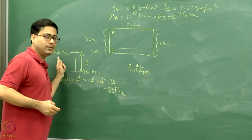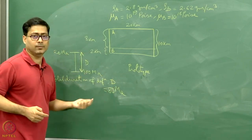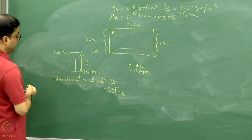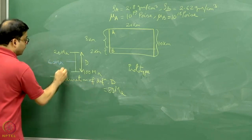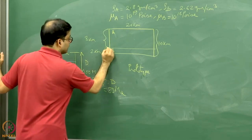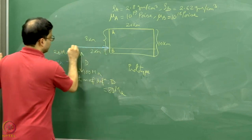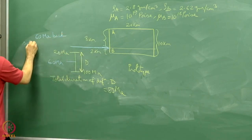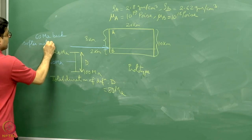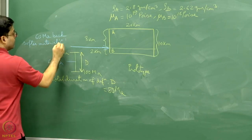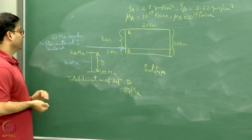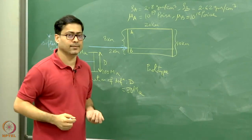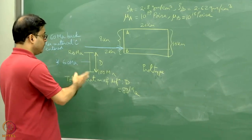These numbers are taken arbitrarily, but in real geological problems they can be found from literature. At 60 million years back, there was an intrusion of softer material — possibly magmatic material C — along the lithological contact between A and B, and the deformation also continued. Now we want to simulate this in the laboratory.